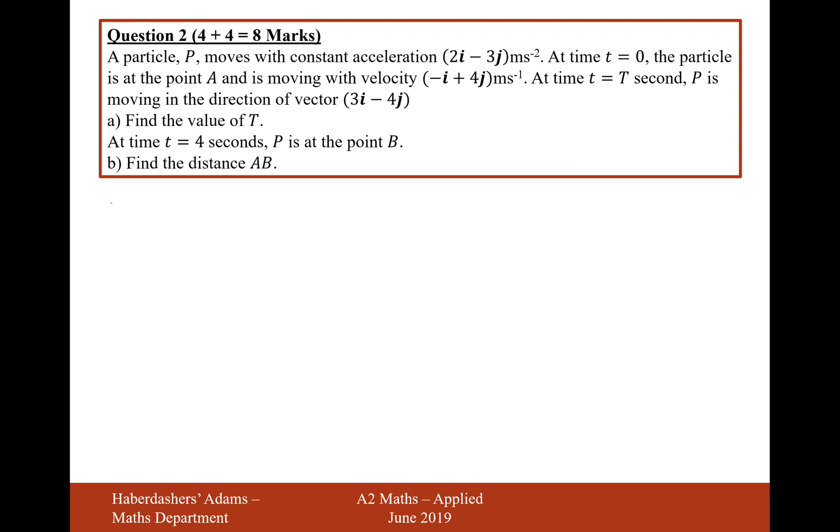I think what I'm going to do here is use the v equals u plus at formula. We have acceleration, we have initial velocity, and we have a final direction of the velocity, so we can somehow combine these together. The final direction of the velocity is going to be 3, -4, but that's just its direction, so it's going to be some factor times that direction. That's the direction it's traveling in, but we don't know what its velocity is, so it's probably going to be some scale factor of this vector.